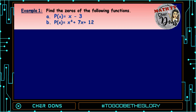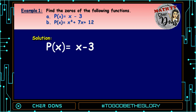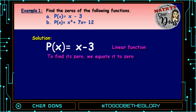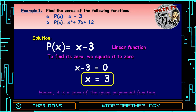Example number 1. Find the zeros of the following functions. Solving for letter A: p of x is equal to x minus 3. That is a linear function. To find its zero, we equate it to zero. So x minus 3 is equal to zero. Solving for x, it is equal to 3. Hence, 3 is a zero of the given polynomial function.